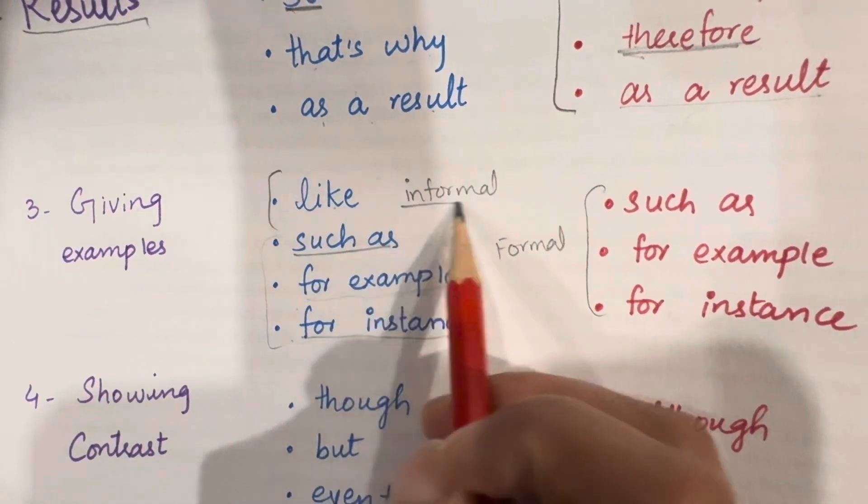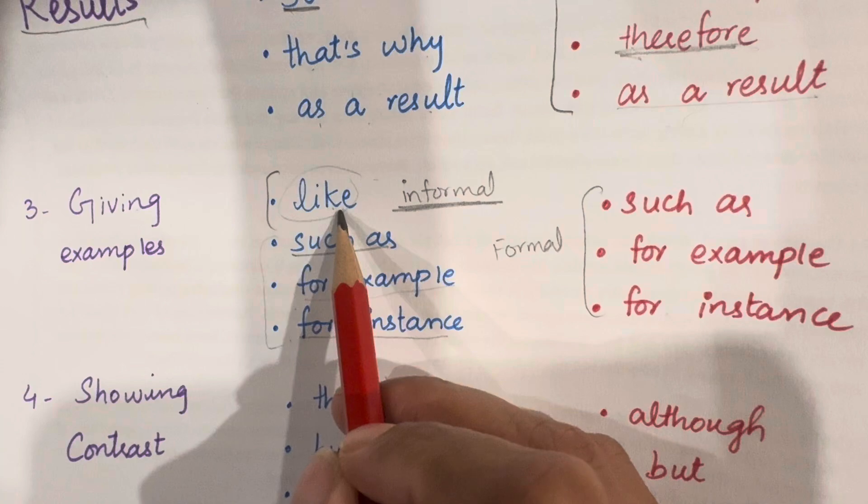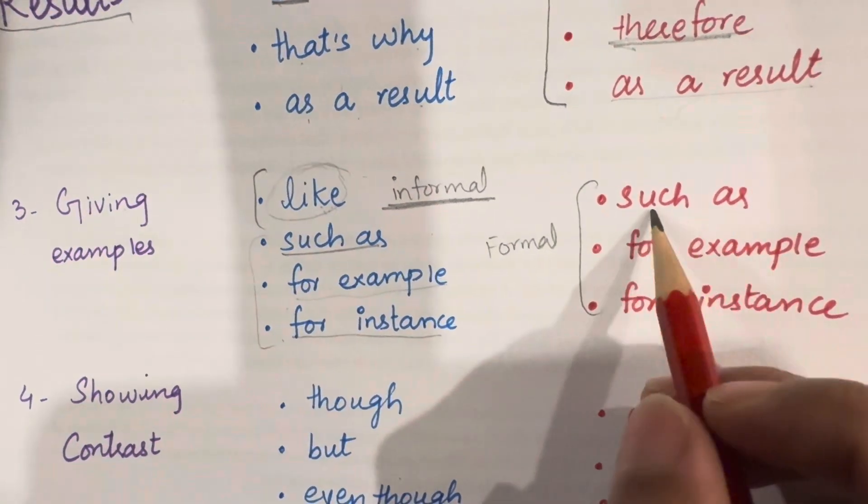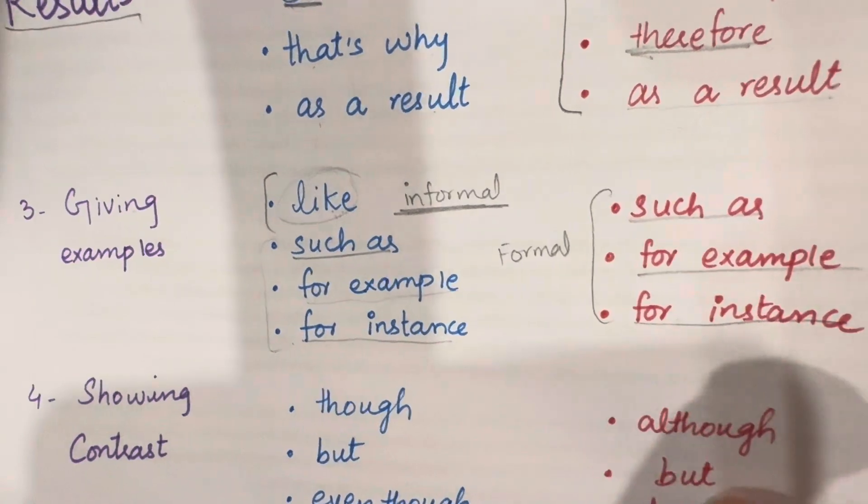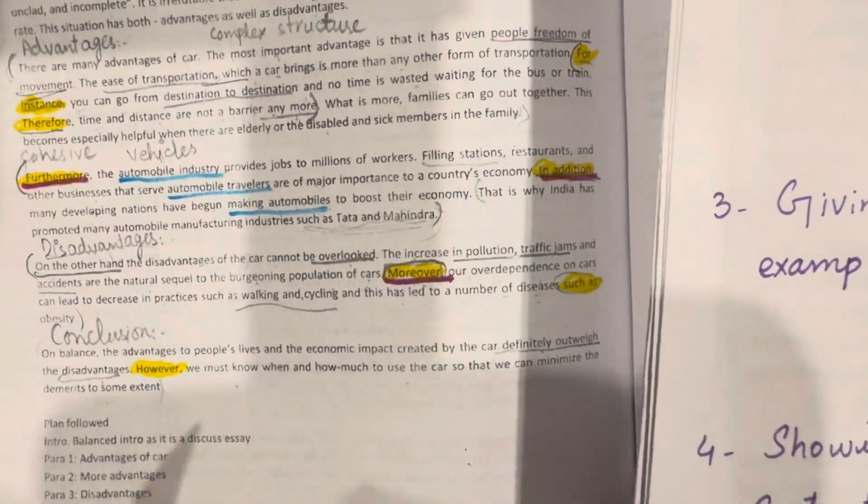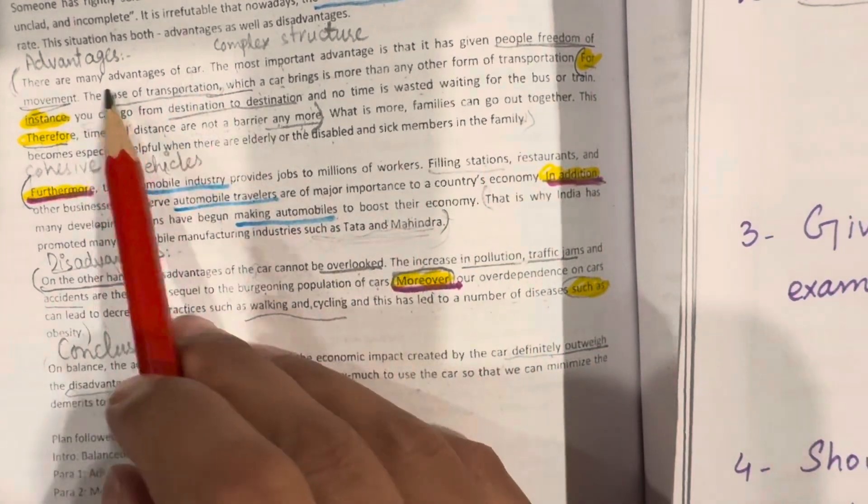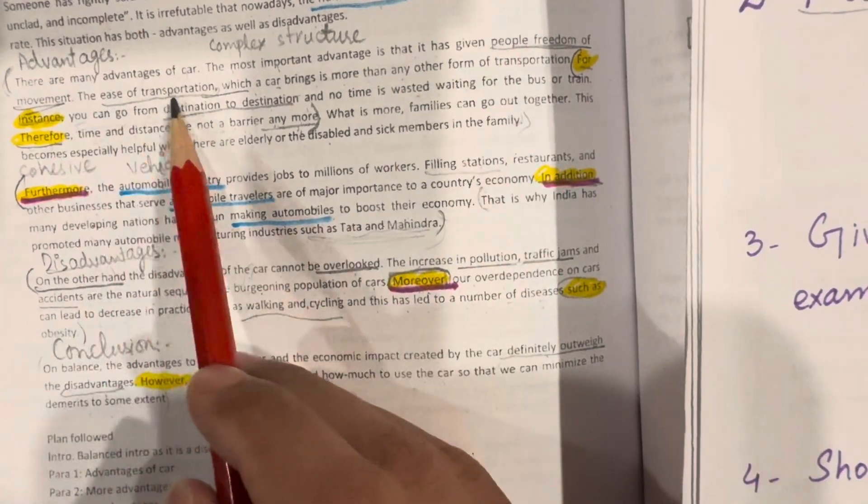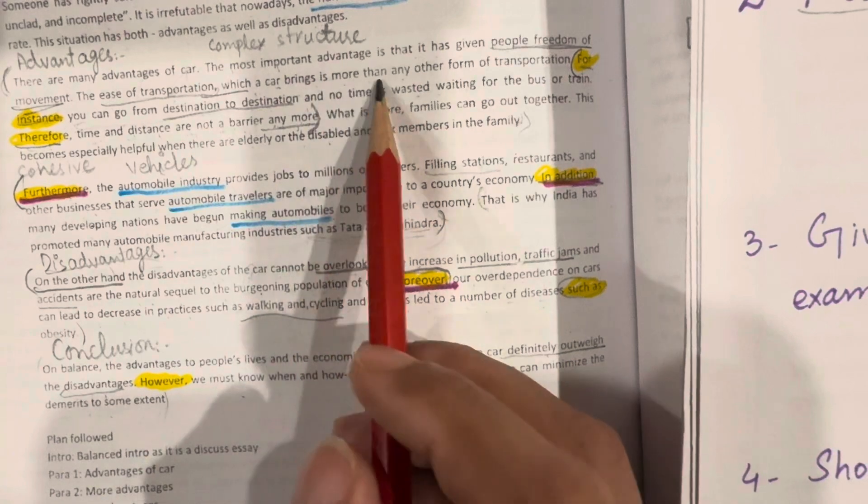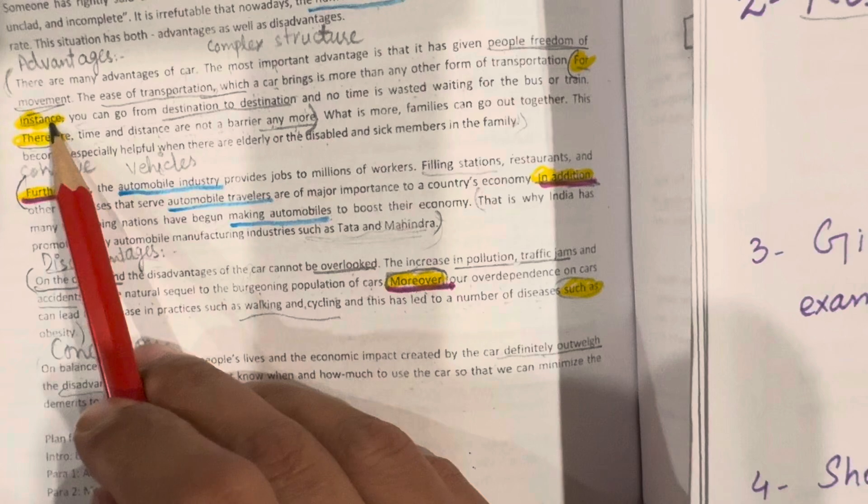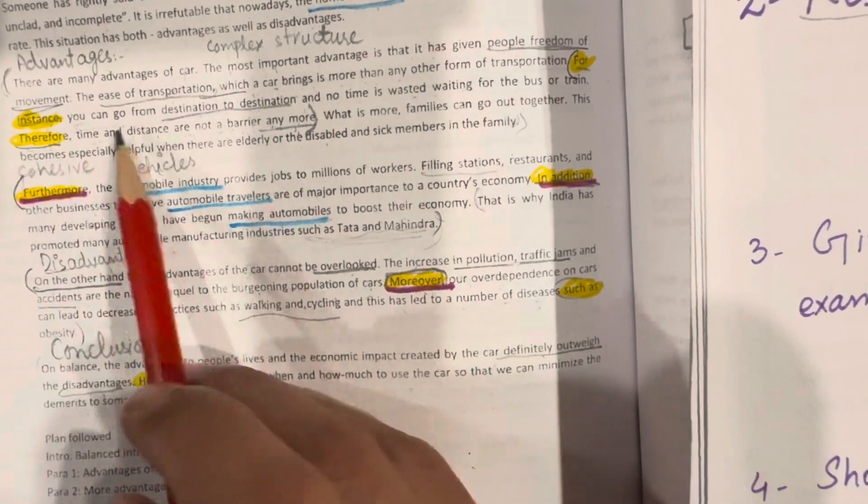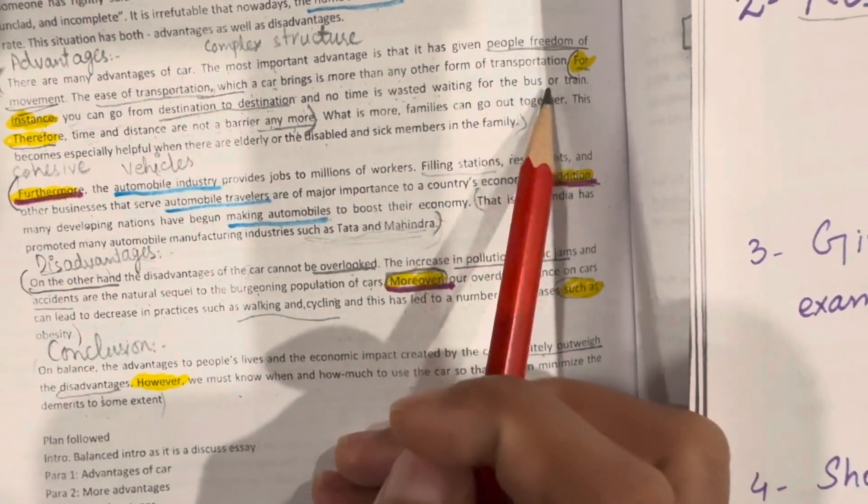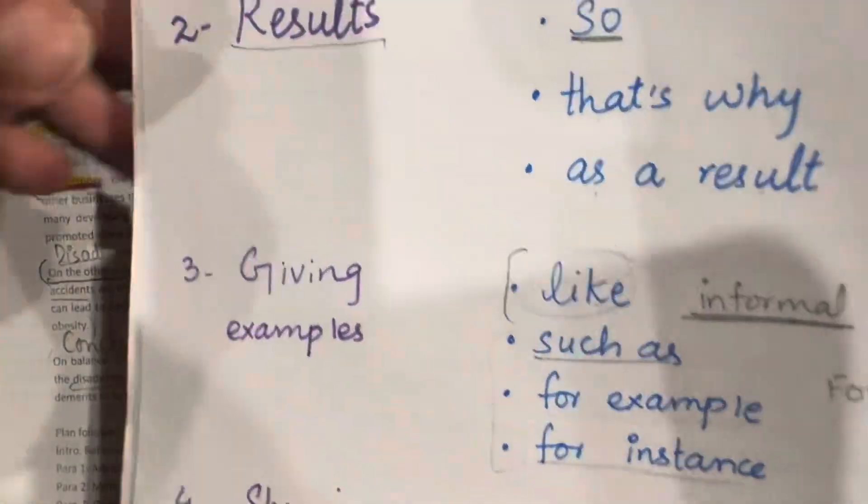You cannot use like in writing. This is informal and you will have a bad impression on the examiner. So, for writing, you can use such as, for example, for instance when you give an example. Now, let's look at this example. The most important advantage is that it has given people freedom of movement. The ease of transportation which a car brings is more than any other form of transportation. For instance, and here you can also write for example or such as, you can go from destination to destination and no time is wasted waiting for the bus or train. So, this is how you can give examples in your writing.